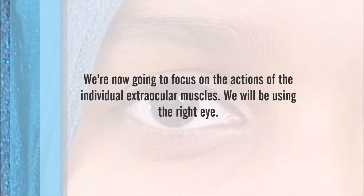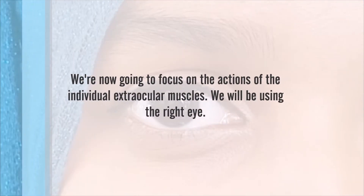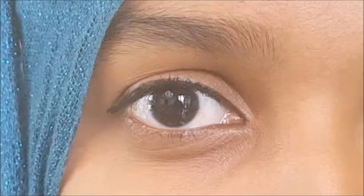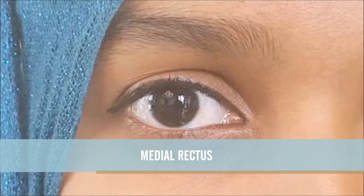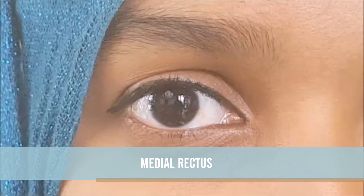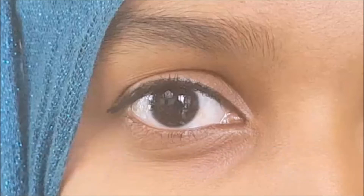We are now going to focus on the actions of the individual extraocular muscles. We will begin by looking at one of the muscles that moves the eye in the horizontal plane: the medial rectus. This muscle is supplied by the third cranial nerve, the oculomotor nerve, and it moves the eye medially. This movement is referred to as adduction. Adduction involves the contraction of the agonist muscle, the medial rectus, and the relaxation of its antagonist, the lateral rectus.